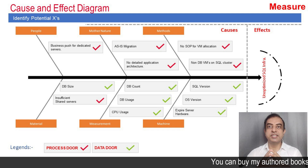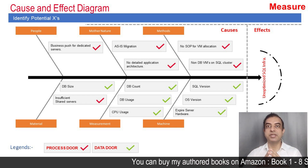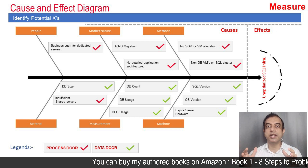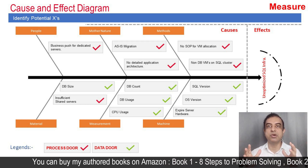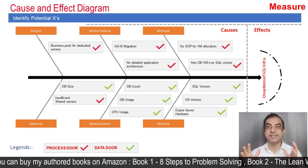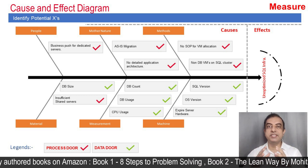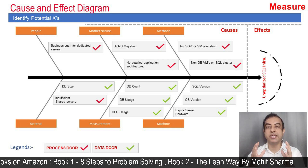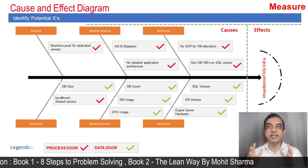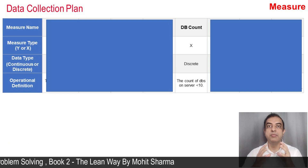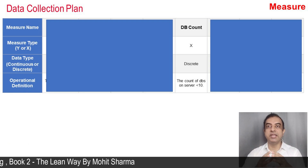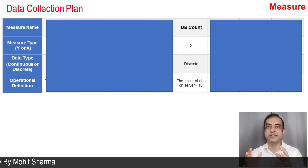The team moved to the Measure phase, where in the first step they identified all the potential causes. All team members got together and discussed the potential causes, also known as X's. On some of the X's the team could collect data — these are marked as data door access — and the rest were studied through the process door approach. The team also created a data collection plan identifying the operational definitions for all data door X's.